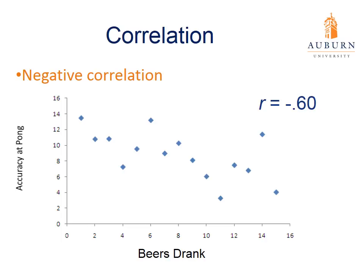Here's another example of a negative correlation — negative 0.6. We're looking at the number of beers consumed and accuracy at beer pong. Generally there's a negative correlation: the more alcoholic beverages consumed, the less accurate someone might be at beer pong. The reverse is true as well — the fewer beverages consumed, the higher the accuracy. It's not a perfect relationship, but generally we see a decrease in motor control as alcohol consumption increases, so there tends to be a negative correlation between the two.